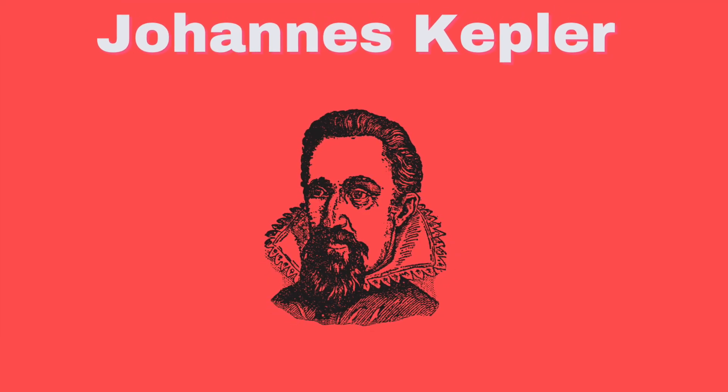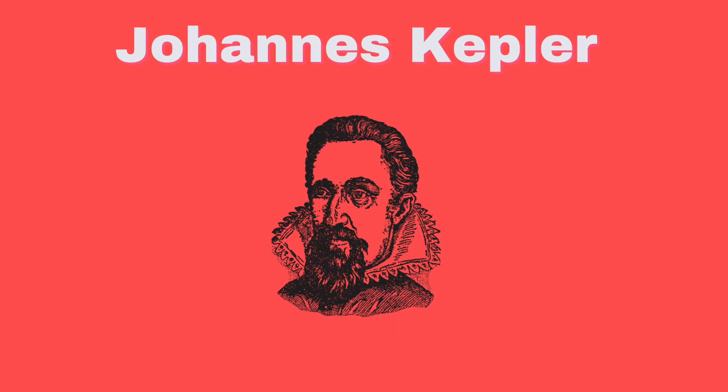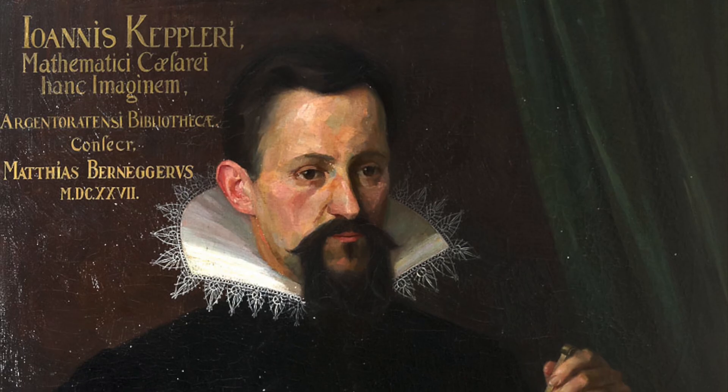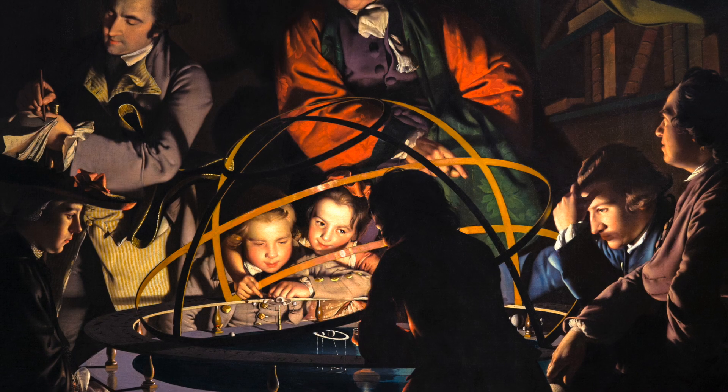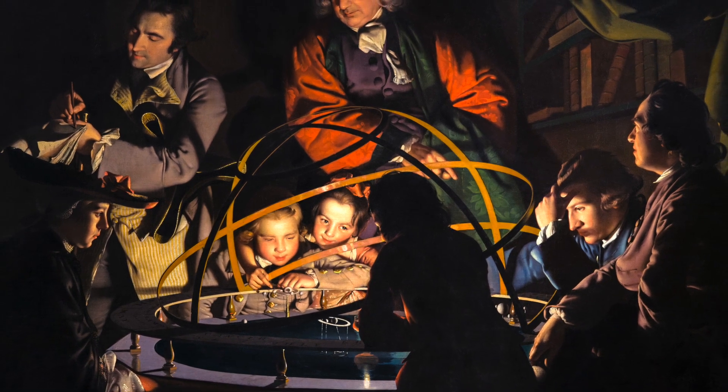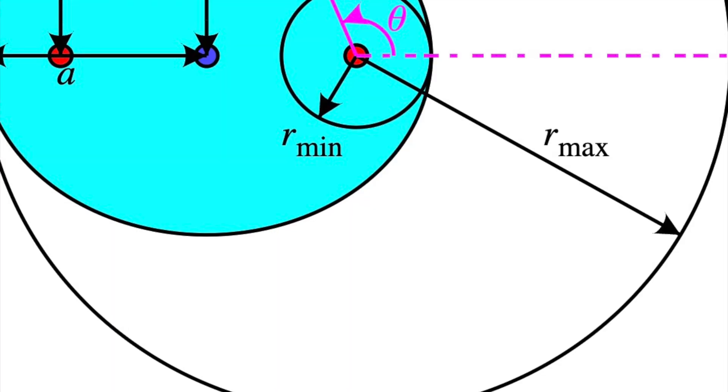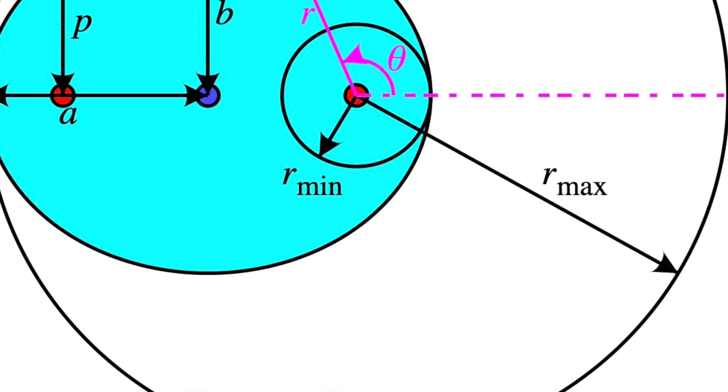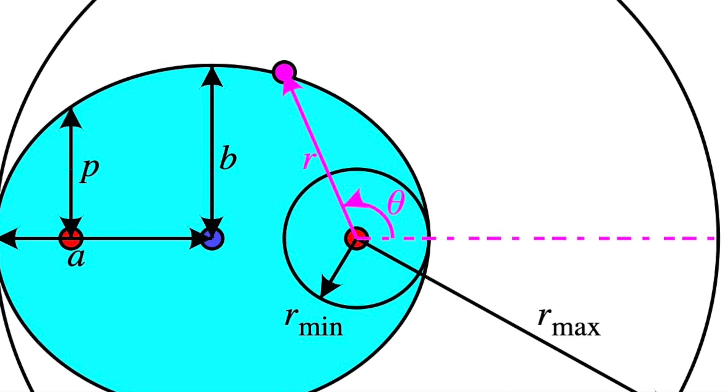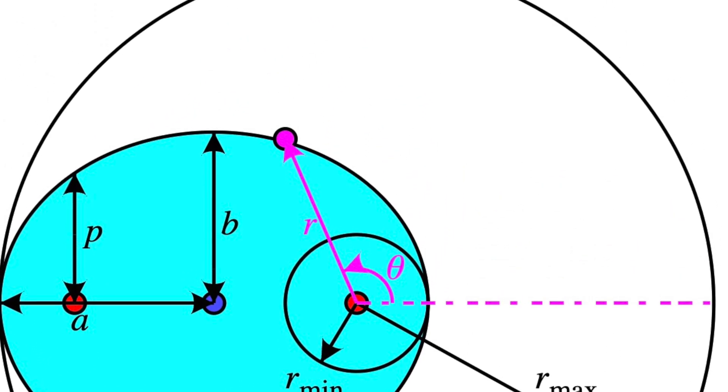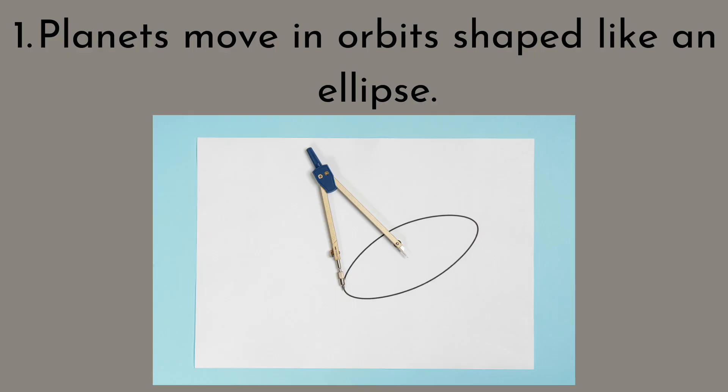The next topic in the scientific revolution is Johannes Kepler. Kepler was a German scientist who expanded Copernicus' theory about the heliocentric universe. He wrote precise mathematical laws describing the planet's movements around the sun. Johannes Kepler is also known for the three laws of planetary motion. These laws include the following: planets move in orbits shaped like an ellipse, not in a circle.